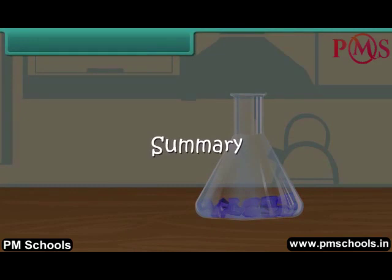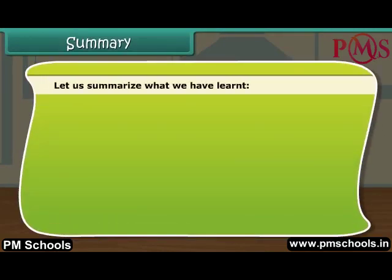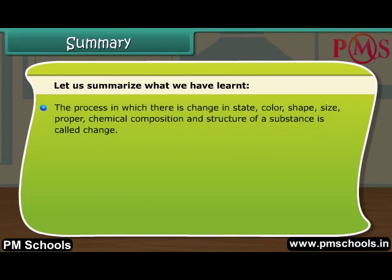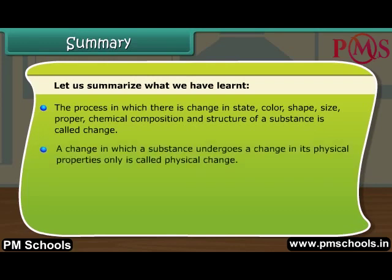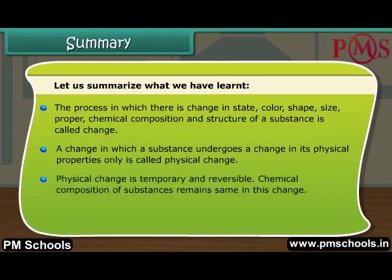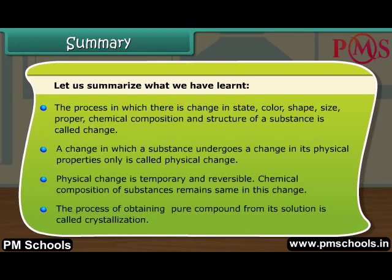Summary. The process in which there is a change in state, color, shape, size, chemical composition, and structure of a substance is called change. A change in which a substance undergoes a change in its physical properties only is called physical change. Physical change is temporary and reversible. The chemical composition of substances remains the same in this change. The process of obtaining a pure compound from its solution is called crystallization.